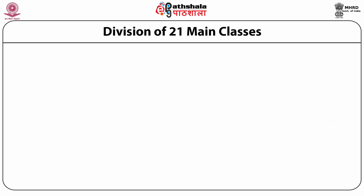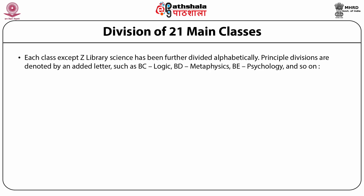Division of 21 main classes: Each class except Z Library Science has been further divided alphabetically. Principal divisions are denoted by an added letter, such as BC Logic, BD Metaphysics, BE Psychology, and so on. Similarly, QA is Mathematics, QB Astronomy, QC Physics — all branches of Q Science.